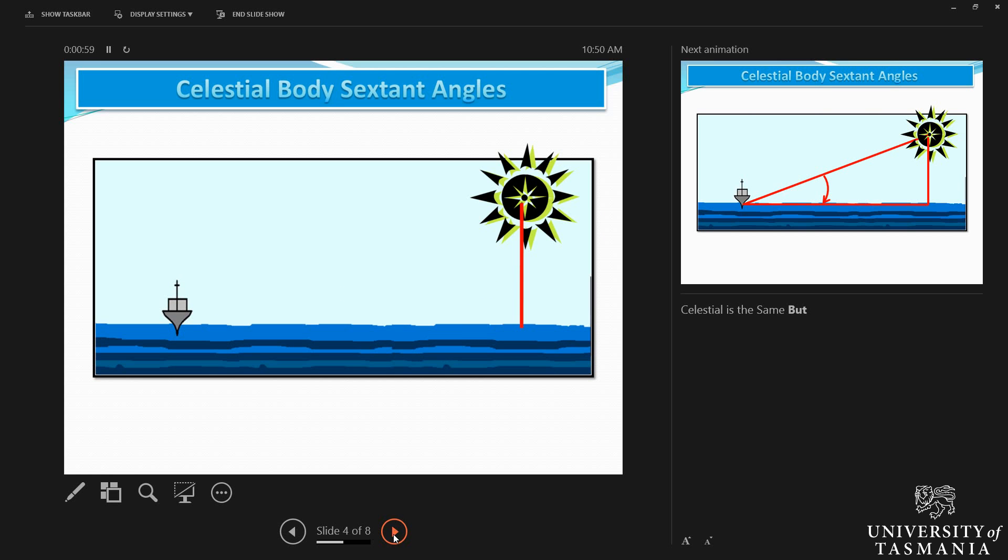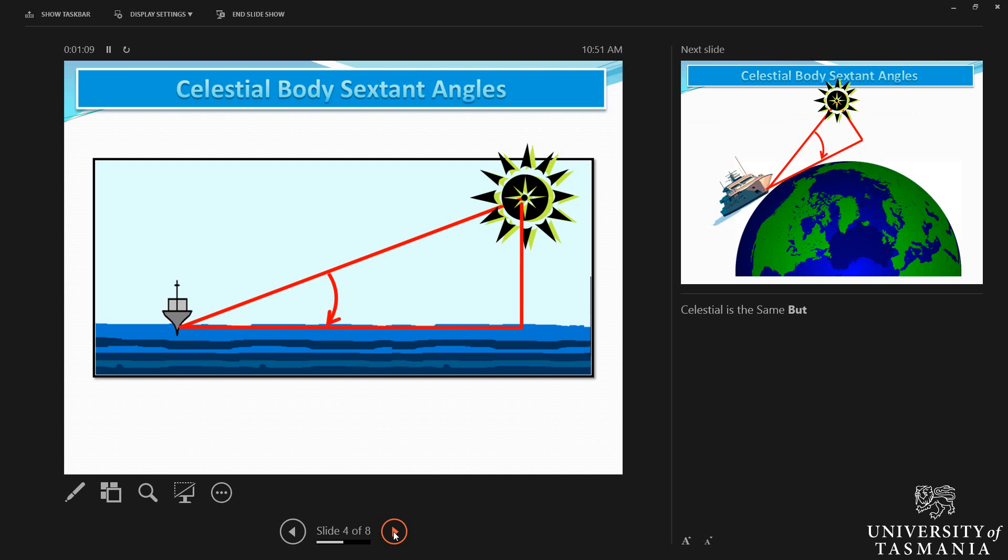So if you look at a celestial body, we are using the sextant basically to measure the angle between the celestial body and the horizon. You can see with the red arrow I have shown you the angle that it makes.